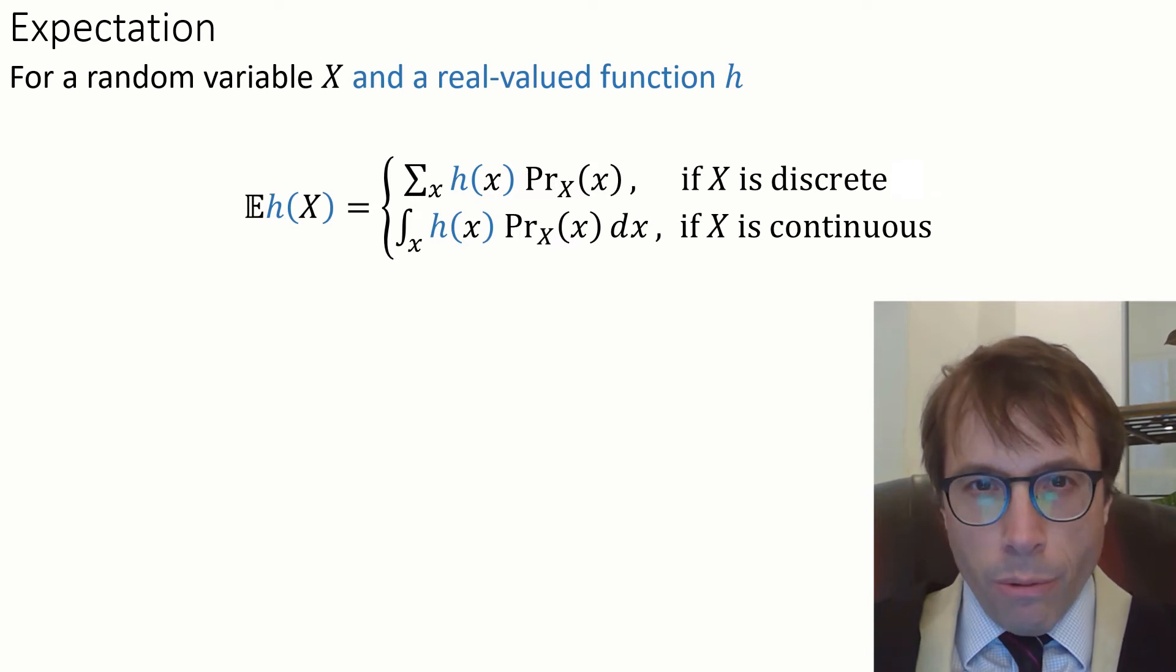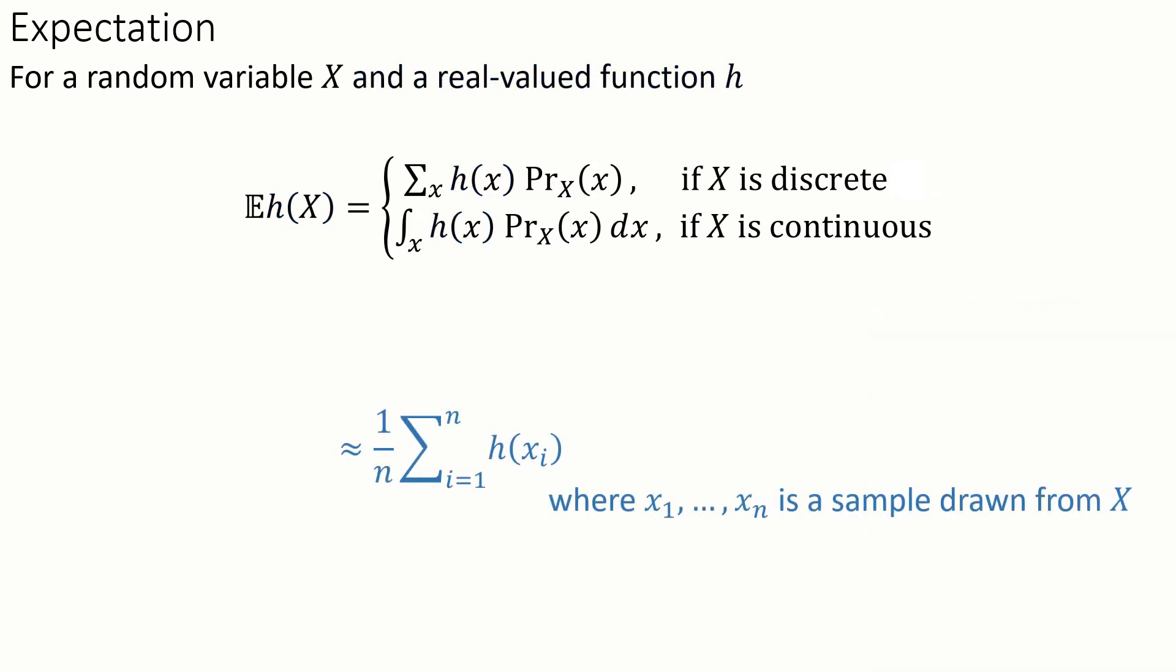Now the general form of the Monte Carlo approximation is just this. We can approximate the expected value of h of x by just sampling some values from x, call our samples x₁ up to xₙ, applying h to each of them and taking the mean. This is the Monte Carlo approximation. It's also called Monte Carlo integration because it's a way to evaluate an integral, at least for the continuous case.